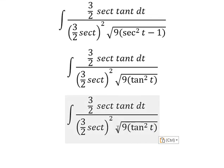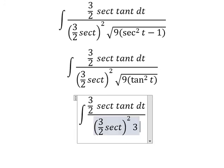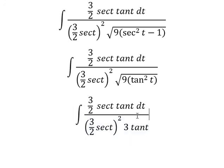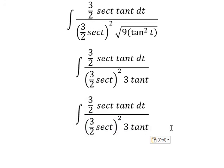The square root of 9 tan t square we have 3 tan t. Later we simplify 3 tan t on numerator and denominator.